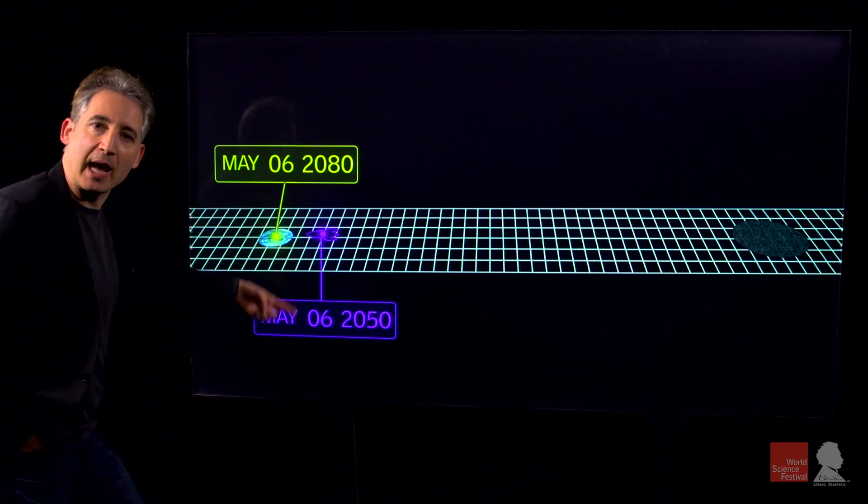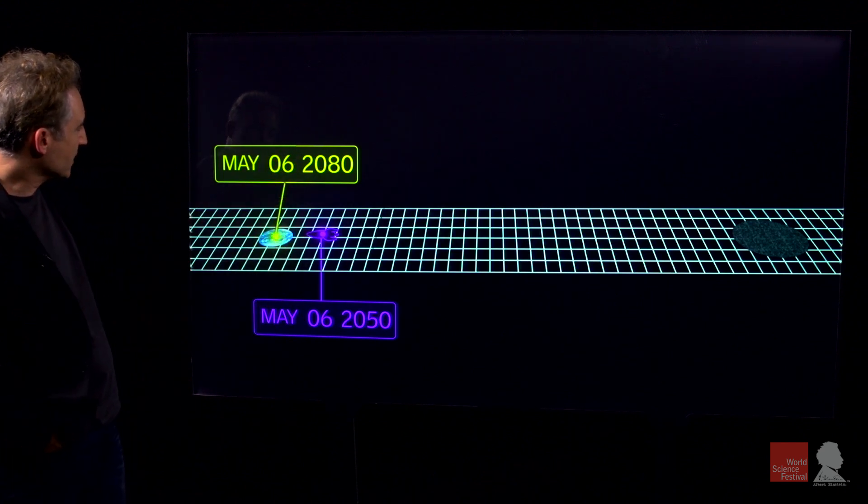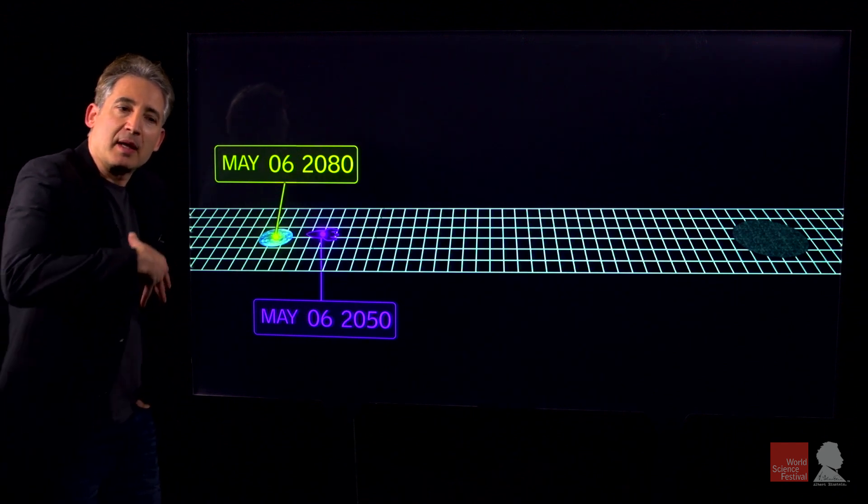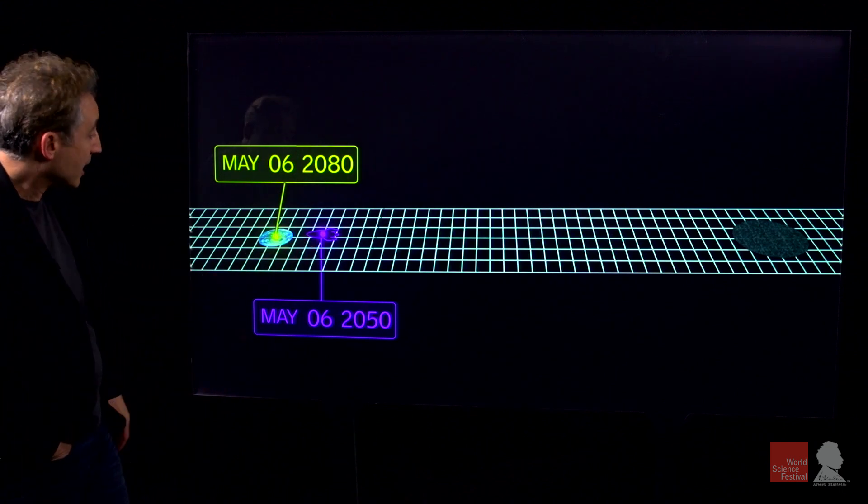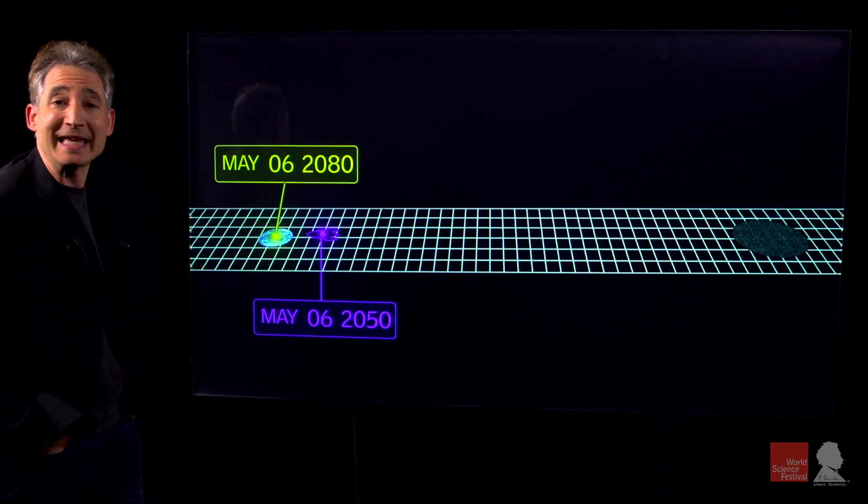In this case, a 30-year time difference between them. If a person gets out of the ship and revisits with his or her friends on Earth, that person will find that their friends are 30 years older relative to the amount that he or she has aged. For this person it's 2050, everyone on Earth says it's 2080.